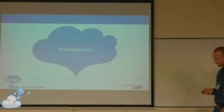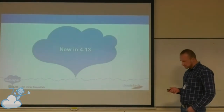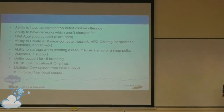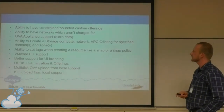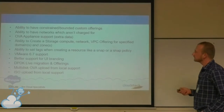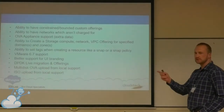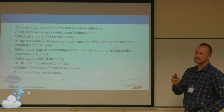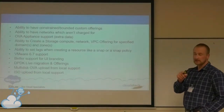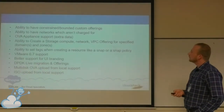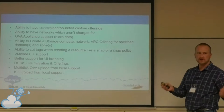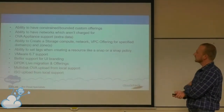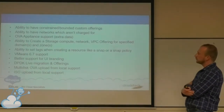Here's a high-level overview of 4.13. We have the ability to have constrained custom offerings — you can say the customer can use a custom compute offering but only between 1 and 10 CPU cores, so the customer cannot go wild. Or you can say the customer can only provision a VM with a custom offering between 1 and 8 gigabytes of RAM. We also have the ability to have networks which aren't charged for — if you have a service network, backup network, or monitoring network, you don't want that charged to your customer.